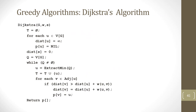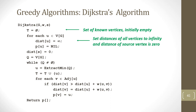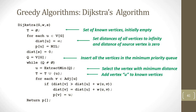Here is the pseudocode for Dijkstra's algorithm. The set of known vertices is initially empty. The distance of all vertices is set to infinity, and the distance of the source vertex is set to 0. All vertices are inserted into the priority queue. Until the queue is empty, we extract the vertex with the minimum distance, mark it as known, and add it to the known set. For each neighbor, we check if a new shorter path has been found; if so, we update the distance and the parent of the neighboring vertex.